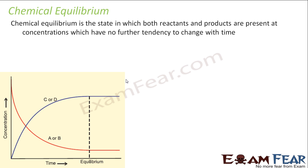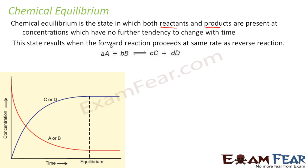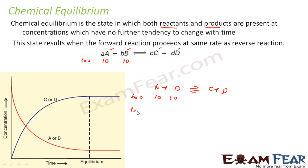Chemical equilibrium by definition is a state in which both reactants and products are present but they don't react — meaning their concentrations don't change over time. For example, suppose you take A and B that react to give C and D. You took 10 moles of A and 10 moles of B at t=0. You'd expect that after some time, t=infinity, A and B would fully react to give 10 moles of C and 10 moles of D. But that doesn't happen.